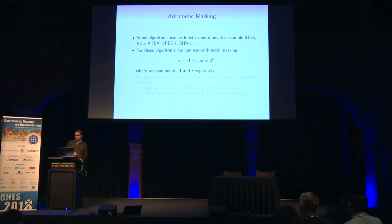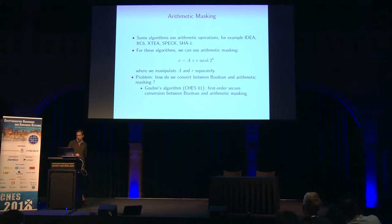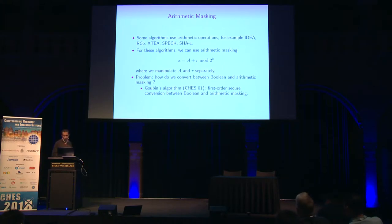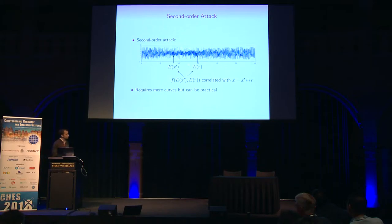If we have an algorithm that combines Boolean and arithmetic operations, the question is how do we convert between Boolean and arithmetic masking? At CHES 2001, Goubin described the first conversion algorithm, which is secure at first order. However, it is possible to mount second-order attacks combining information from the masked value and the random R. This second-order attack requires more traces but can be practical.